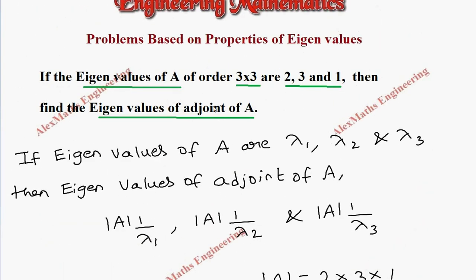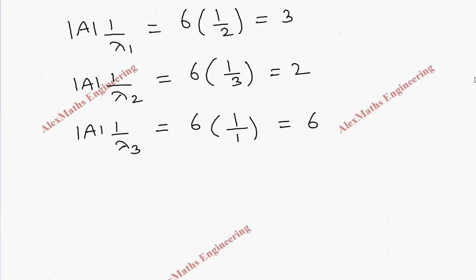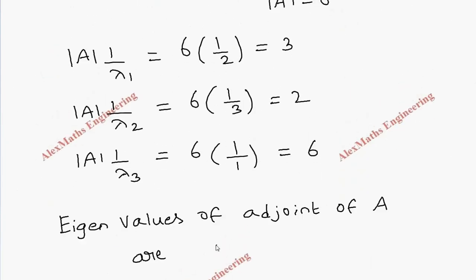Therefore, what they want is the eigenvalues of adjoint of A. The eigenvalues of the adjoint of A are the values which we got using the properties are 3, 2 and 6.